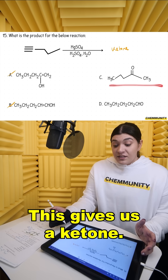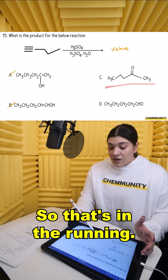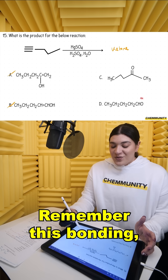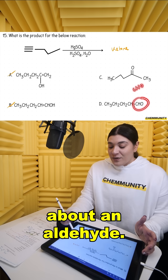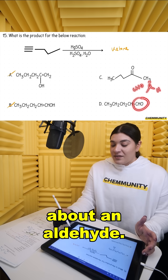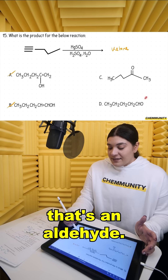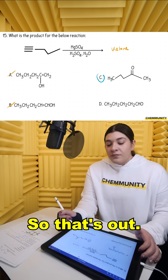This gives us a ketone, so that's in the running. What about this one? Remember this bonding — this is actually talking about an aldehyde. So whenever we see CHO, that's an aldehyde. So that's out.